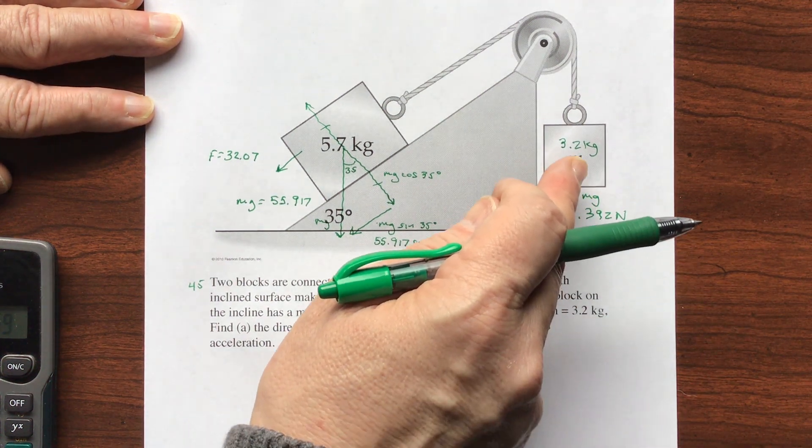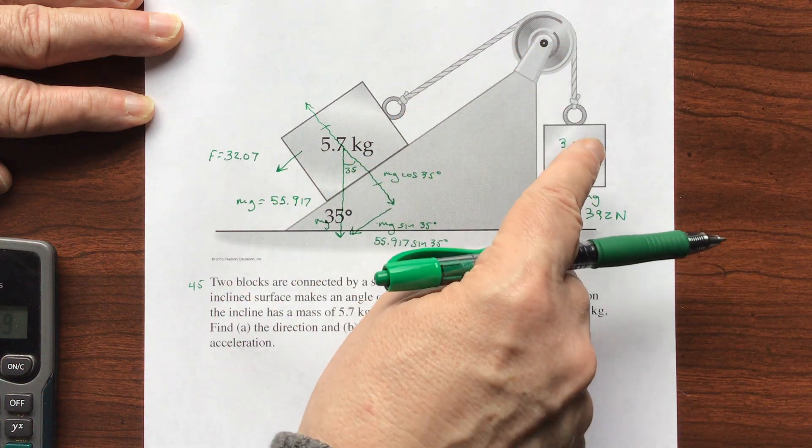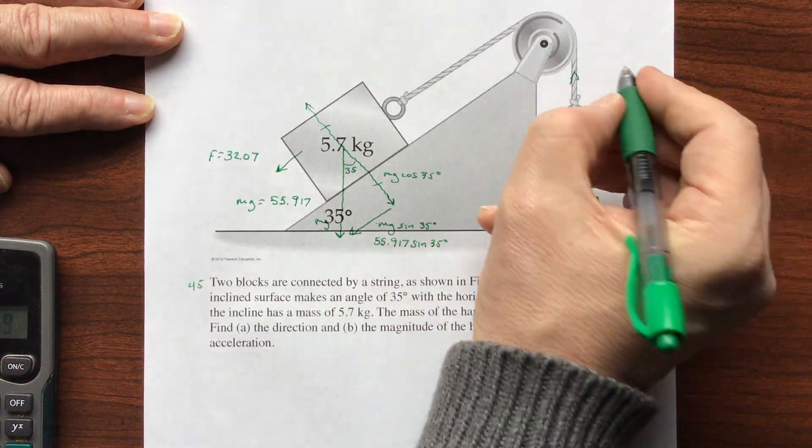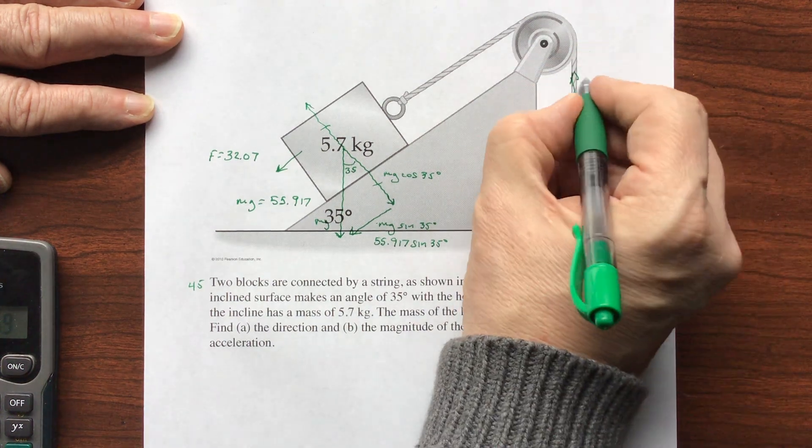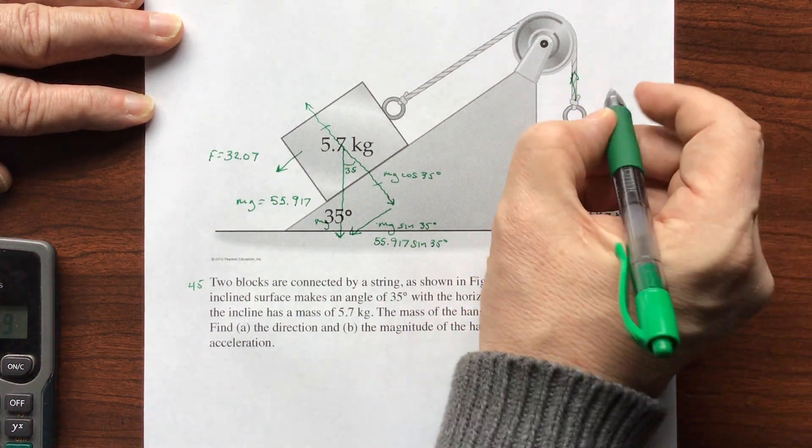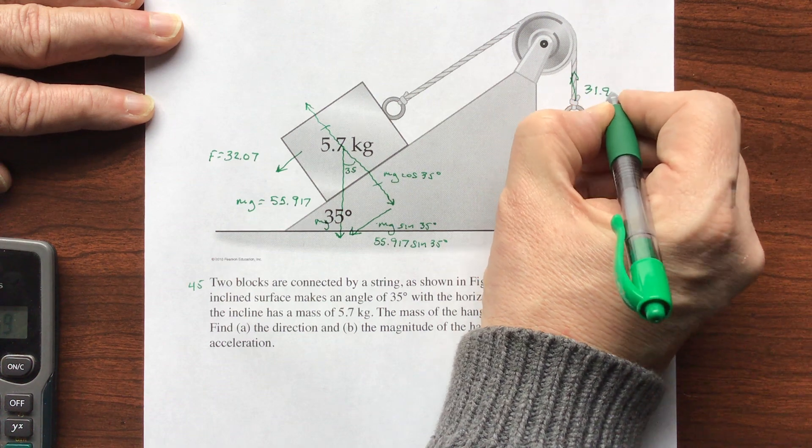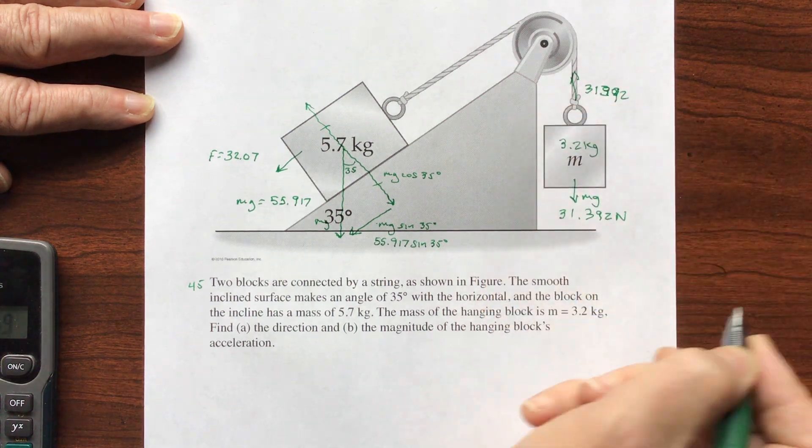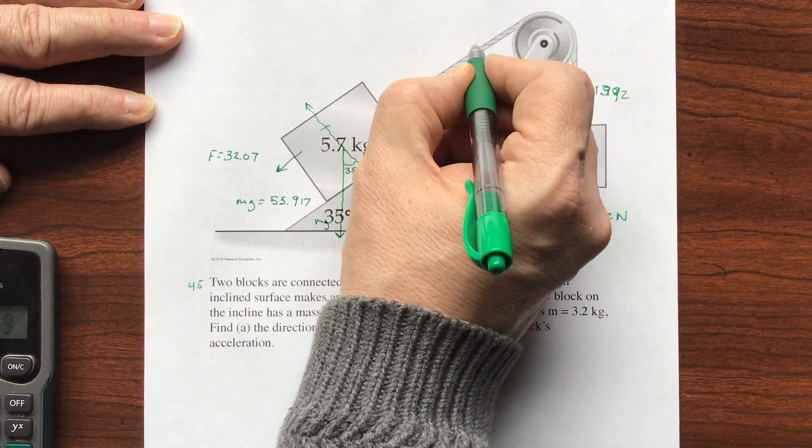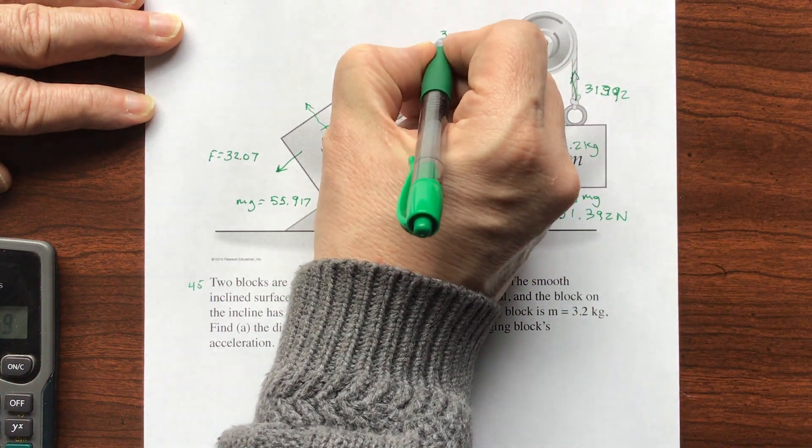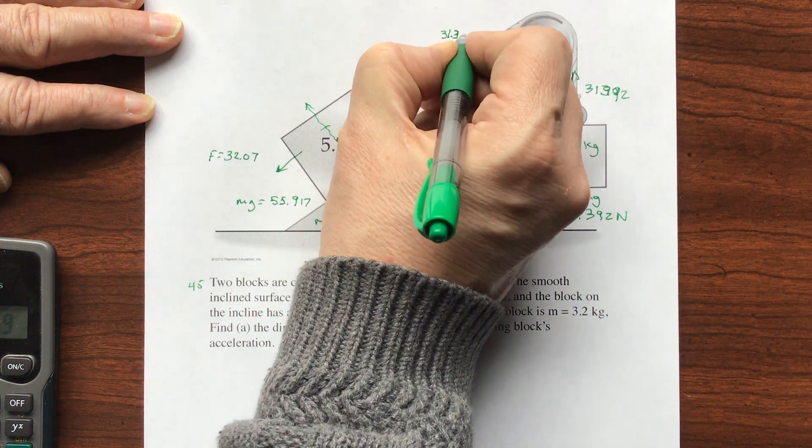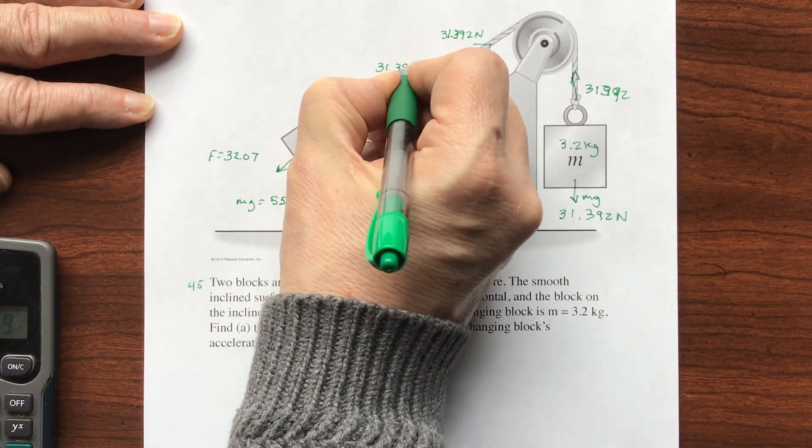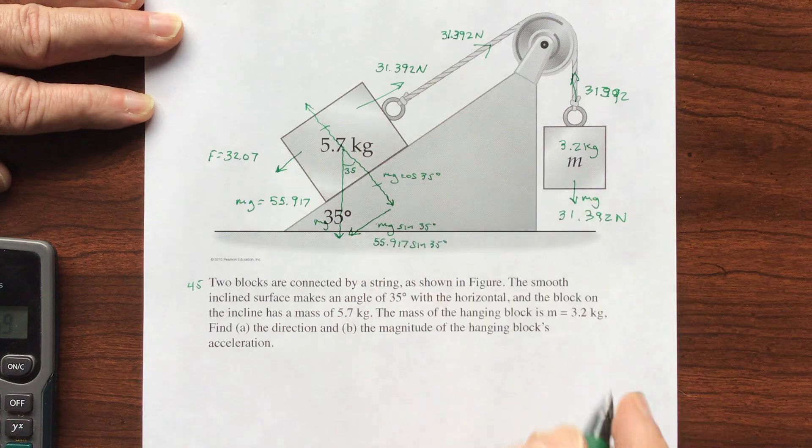So we have 32.07 going down. And we have 31.392 going down. So as I figure this out, this is exerting this much as tension. So this T, the tension in that rope, is going to be the same because it's at the moment not moving. So this is 31.392. That means that going up is equal to 31.392 newtons.